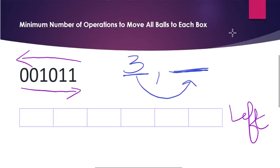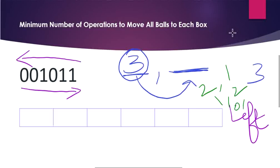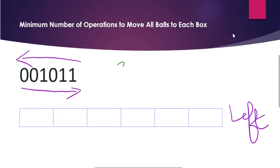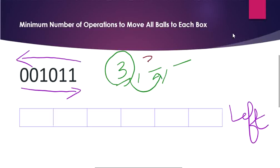Since you move one ball at a time, moving 3 balls to the adjacent box takes 3 steps. To move those 3 balls two boxes over takes another 3 steps — so 6 total. Using this concept, we move balls from the first index towards the right. Starting from the leftmost index: it has 0 balls, nothing to move. The next index also has 0 balls. The third index has 1 ball — so far the ball count is 1. This ball is in the same position, so the step count is 0.